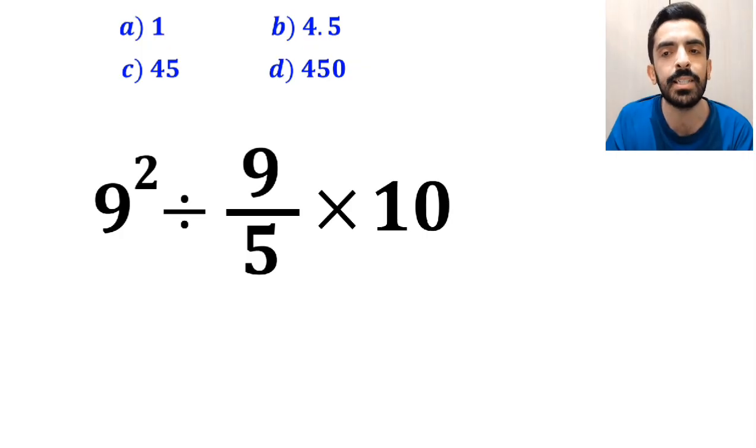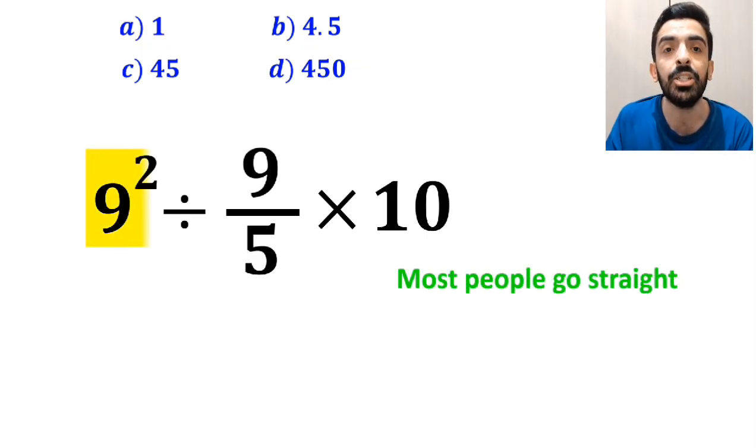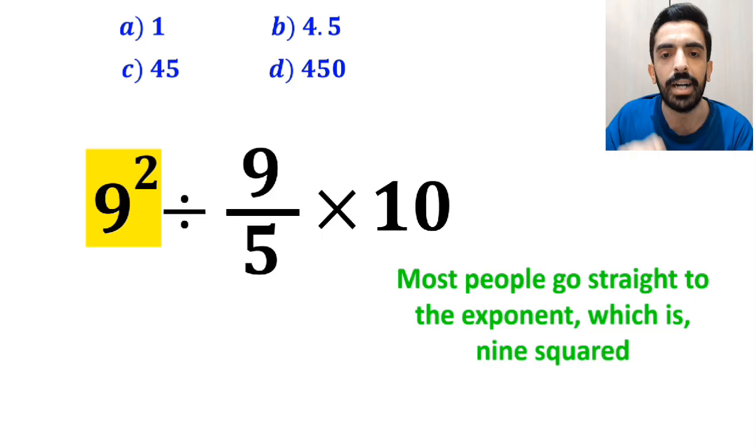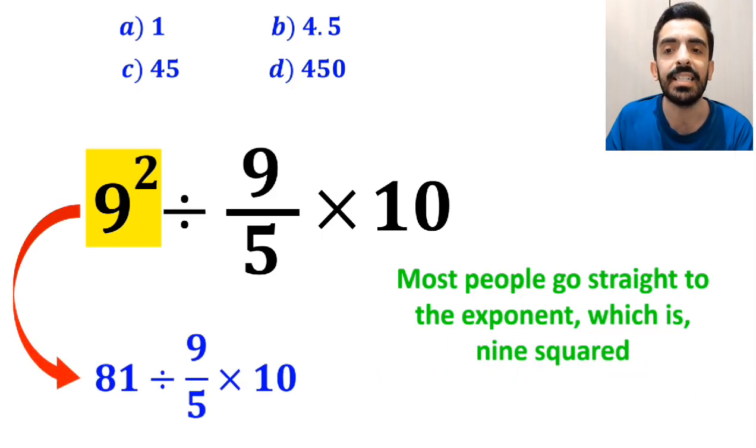In the first step to solve this question, most people go straight to the exponent, which is 9 squared, and they rewrite this expression as 81 divided by 9 over 5 multiplied by 10.